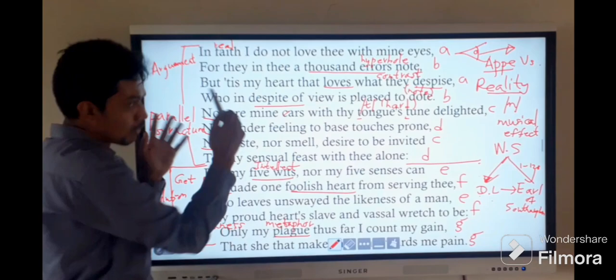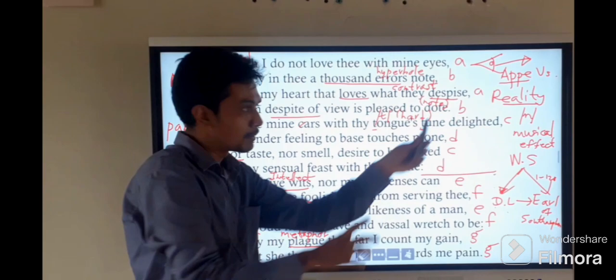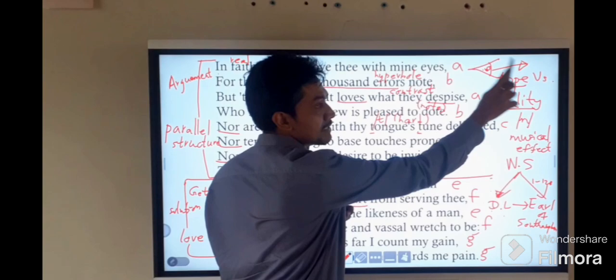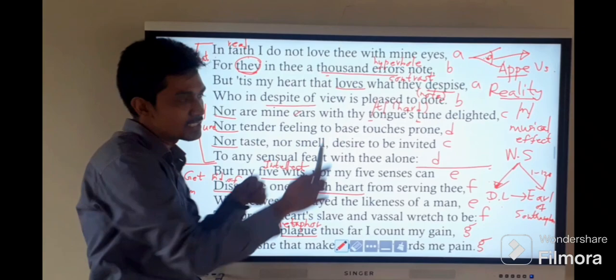Now let's read the poem. The poet persona says, I do not love thee with mine eyes. From the real sense, he is not loving that lady. For they in thee thousand errors note. Thousand errors means overstatement, that is the hyperbole in this poem.